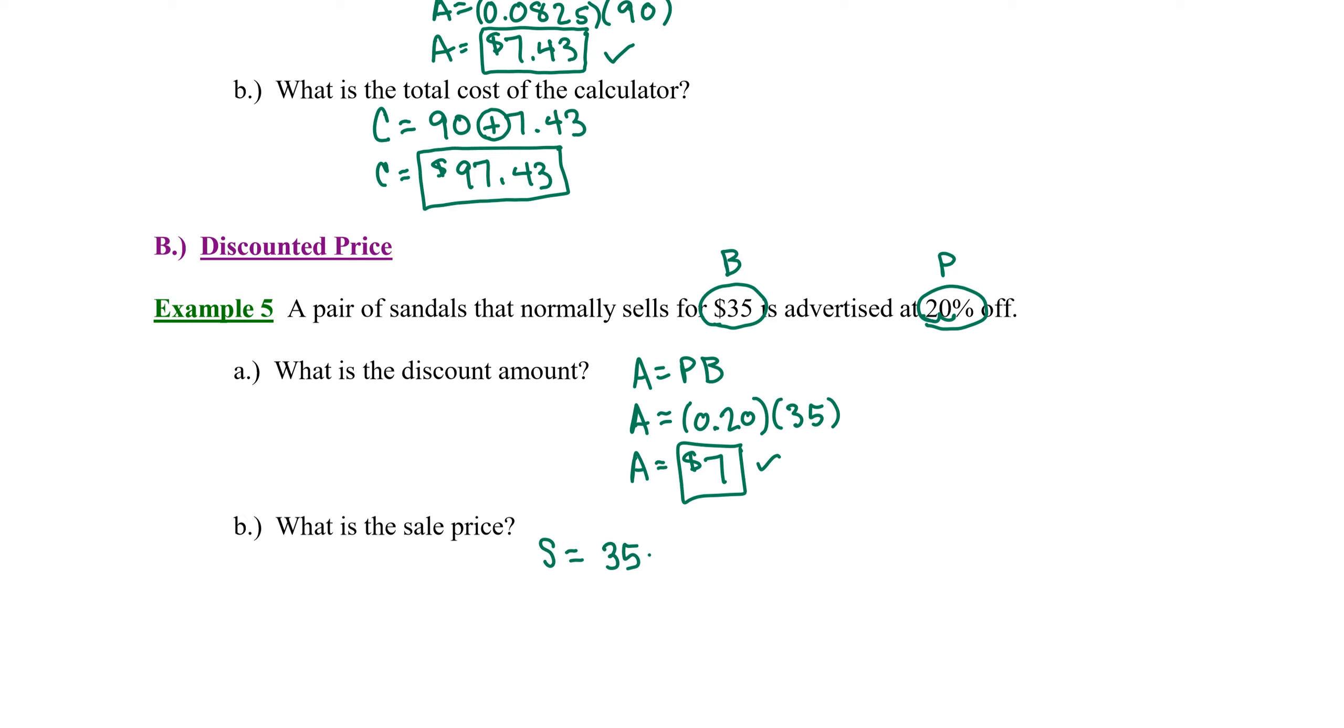and we subtract the discount amount. This gives us a sale price of $28. That's good news. It looks like it's within my budget. I like it.